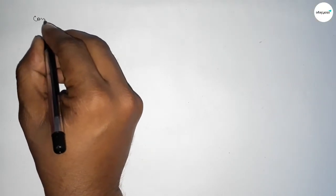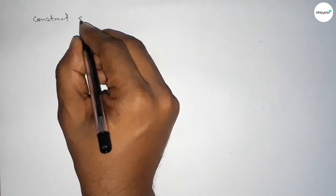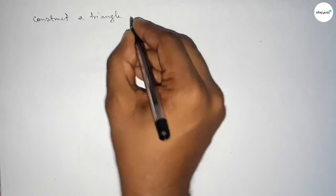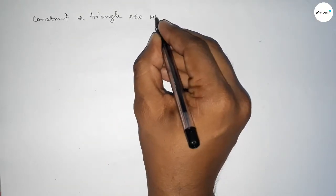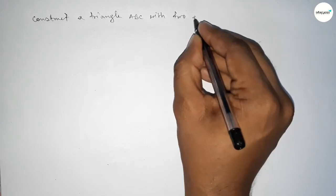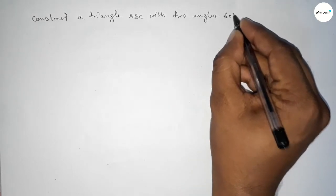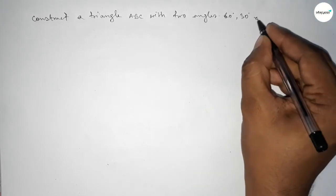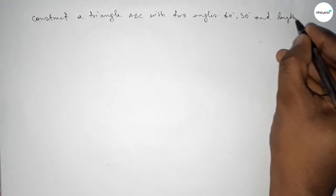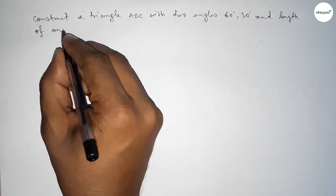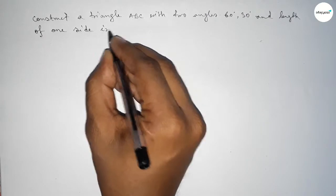Hi everyone, welcome to SI Share Classes. Today in this video we have to construct a triangle ABC with given two angles — 60 degrees and 30 degrees — and a given length of one side of the triangle of 6 centimeters.